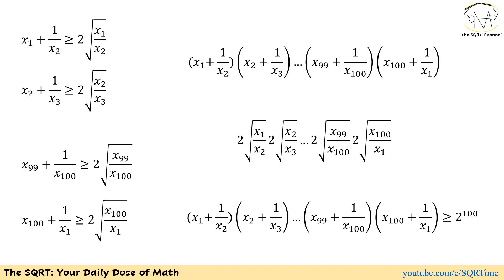On the right-hand side we will have 2 times the square root of x1 over x2, times 2 times the square root of x2 over x3, and so on, and for the last term we have 2 times the square root of x100 over x1.